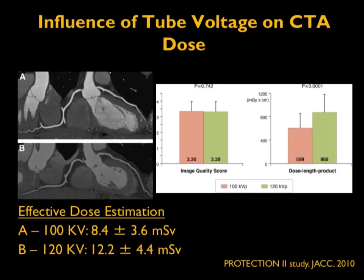Here is a clinical study showing the influence of tube voltage on CT angiography dose. This study involved patients scanned at 100 kV and 120 kV and clearly demonstrates that radiation dose decreases with lower tube voltage even though image quality scores remain the same. Therefore, for thin, small, and average-size patients, going down in kV from the standard 120 kV has the advantage of decreasing radiation dose to the patient.